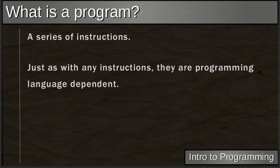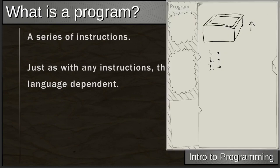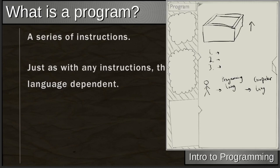Programming languages vary in terms of syntax, similar to how human languages have nouns and verbs. You can effectively translate human speech to computer speech. What we're doing when we make a program is going from the way we think — in instructions — to the programming language.